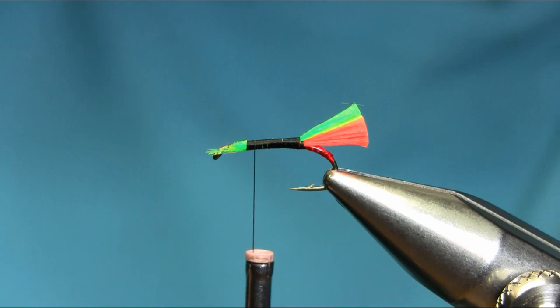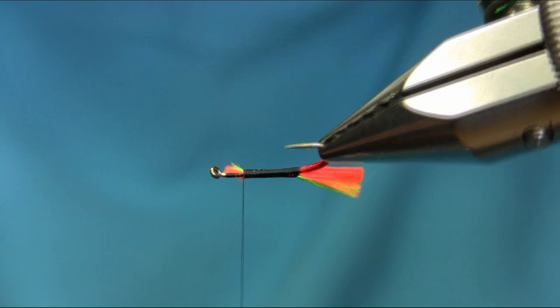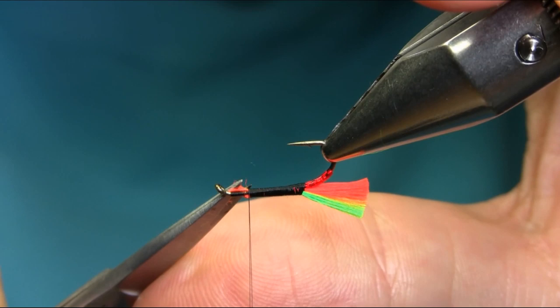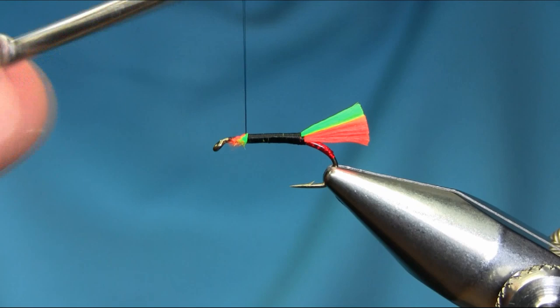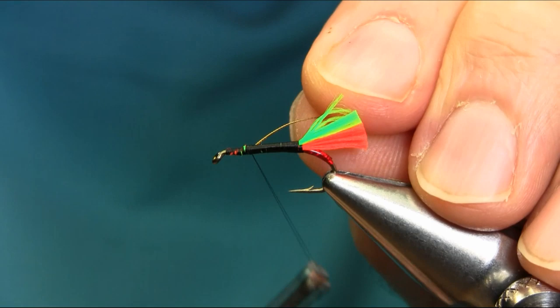At this point, this is really important. We can have more hackle in the front, so I just want a clean eye. For catching the rib, I'm using golden oval tinsel.